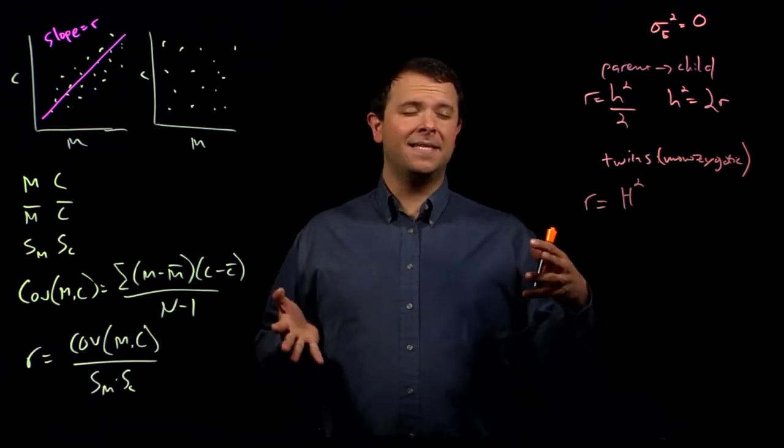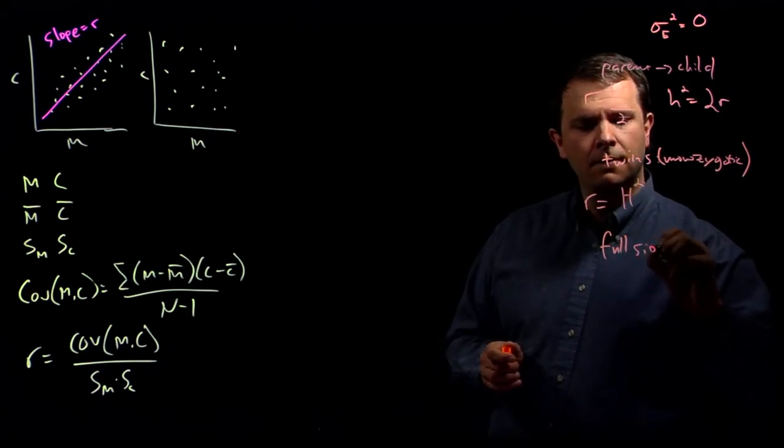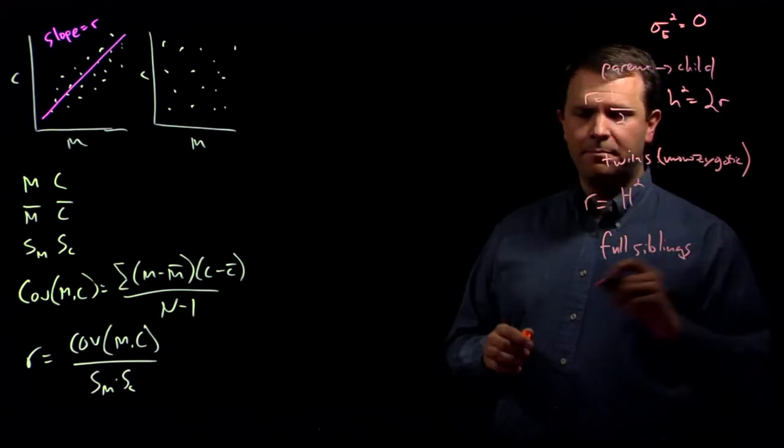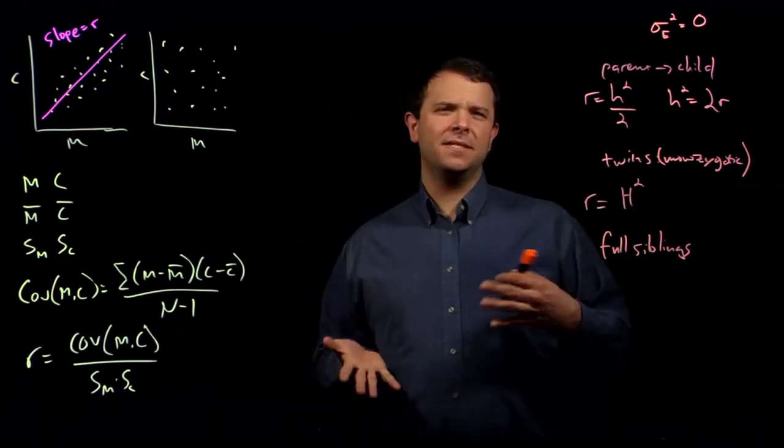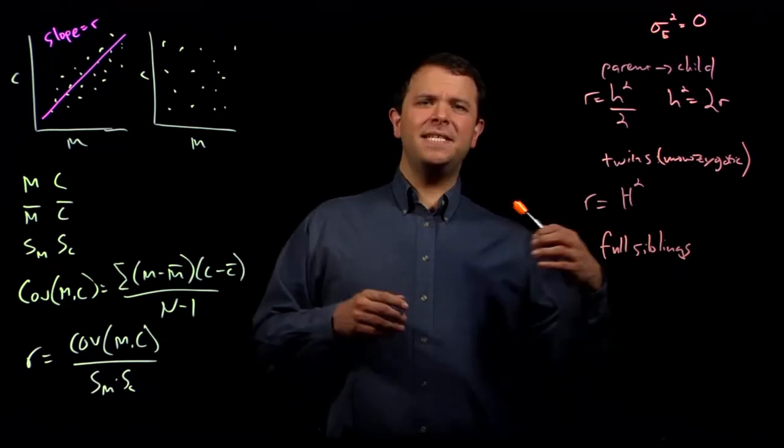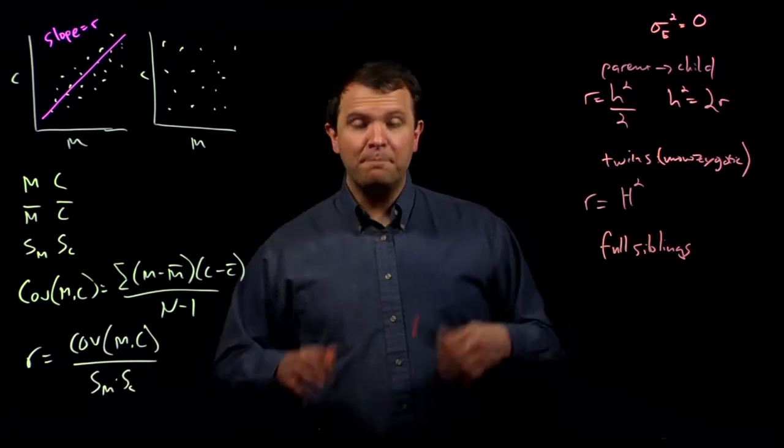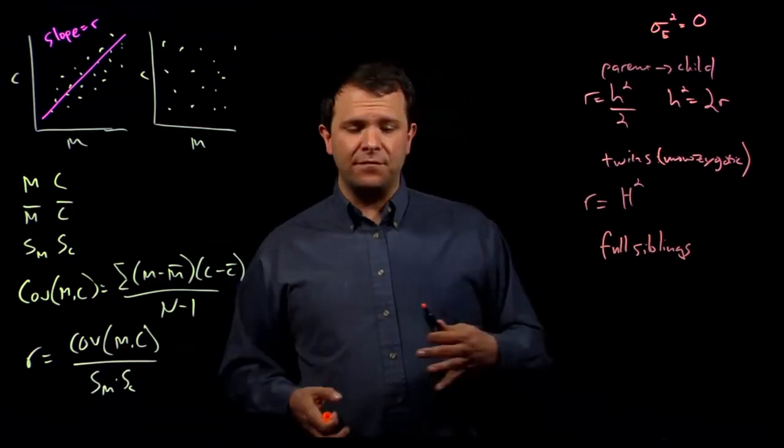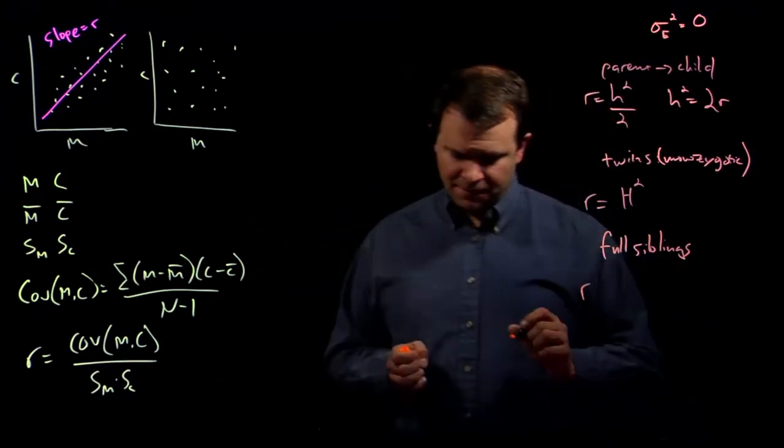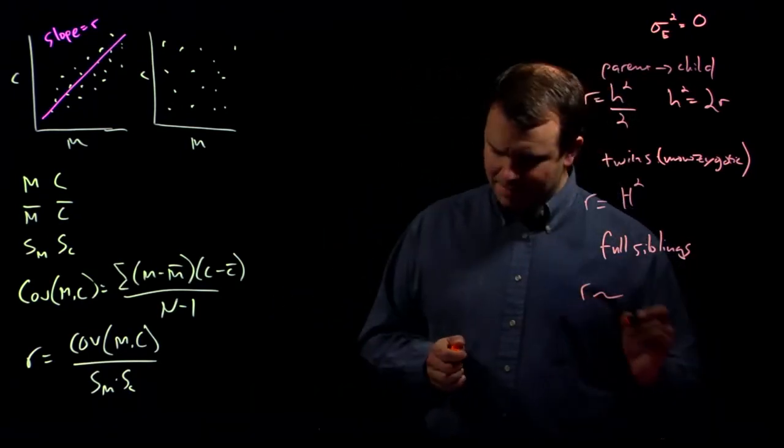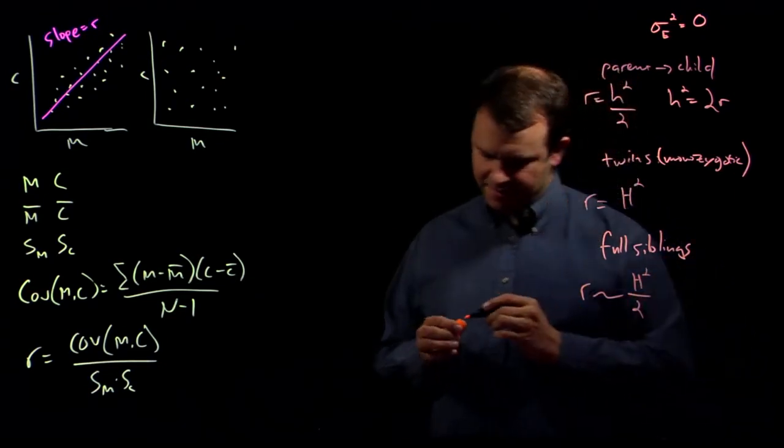In the case of full siblings, brothers and sisters from the same parents, for example, the situation is a little more complicated. There's still some dominance and epistasis relationships that are shared here, but only, on average, half of those alleles are shared. And so, on average, the correlation coefficient is about half of the broad sense heritability.